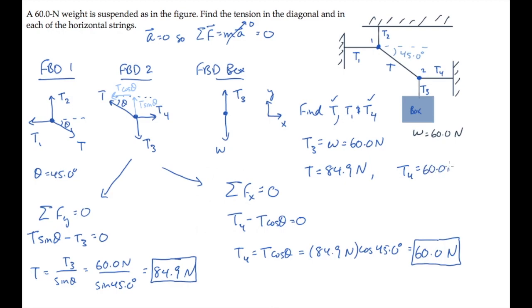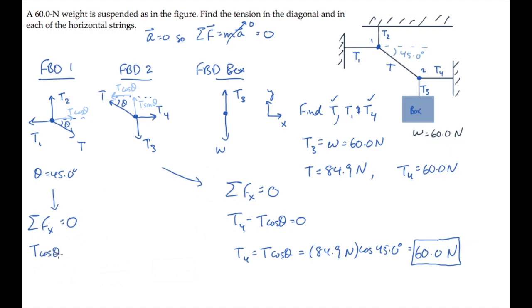And finally, we can use the free-body diagram for knot number one, applying Newton's second law in the horizontal direction, so that we get T cosine of theta minus T1, equaling zero. We can solve this for tension T1. And that's the same expression we wrote a minute ago, so we know that also equals 60 Newtons. That's the last unknown we were asked to find.